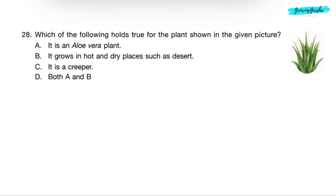Question 28: Which of the following holds true for the plant shown in the given picture? The plant shown in the given picture is of aloe vera. It grows in hot and dry places such as deserts. It can live without water for many days as it stores water in its thick and fleshy stems. So correct answer will be option D: Both A and B.